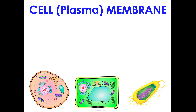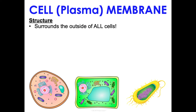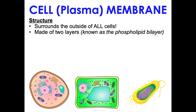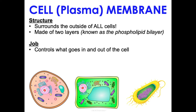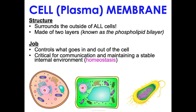The cell membrane, also called the plasma membrane, surrounds the outside of all cells. Some cells have the additional surrounding structure of the cell wall, but every cell has a cell membrane. It has two layers known as the phospholipid bilayer. Its job is to control what goes in and out of the cell. It is critical for communication within and between cells, and for maintaining a stable internal environment known as homeostasis. In animal cells it's the outermost layer; in plant and prokaryotic cells, the cell wall is on the very outside.